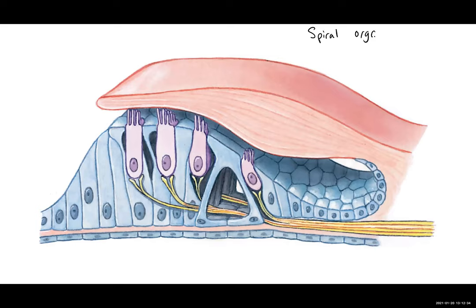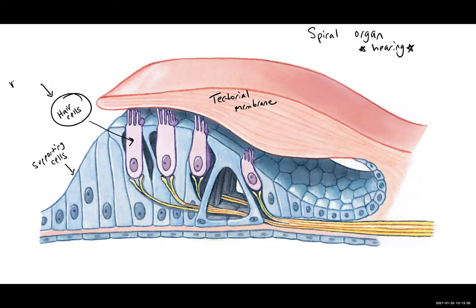This is a super close up version. We are detecting the sense of hearing in this structure. We have what's called the tectoral membrane, some epithelial supporting cells, and embedded in those supporting cells, we have the hair cells, which are the mechanoreceptor cells that detect the sound waves.